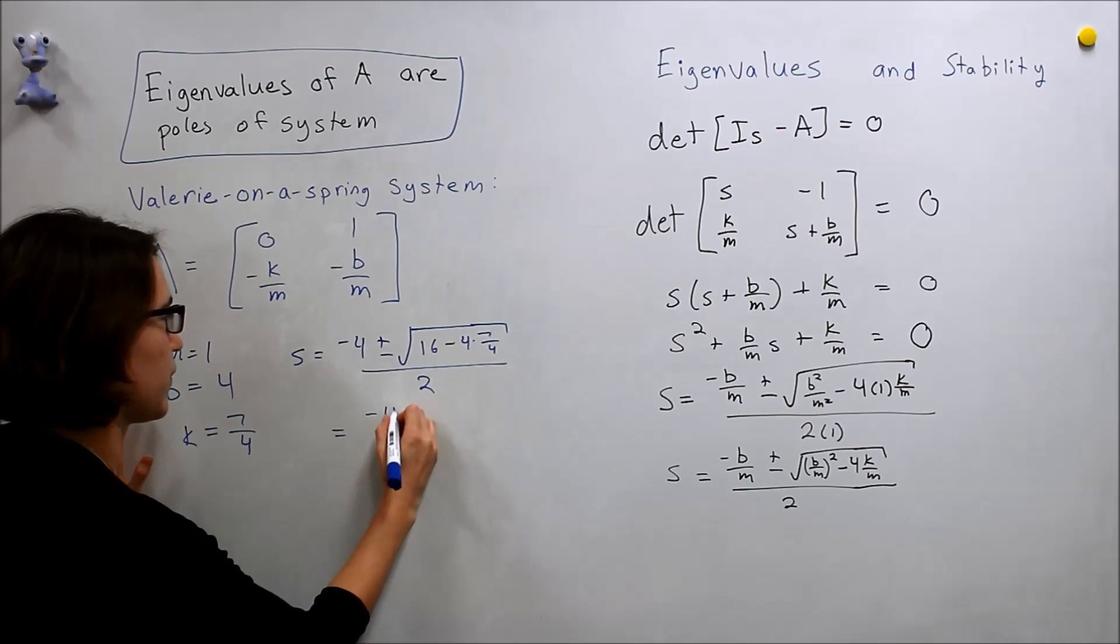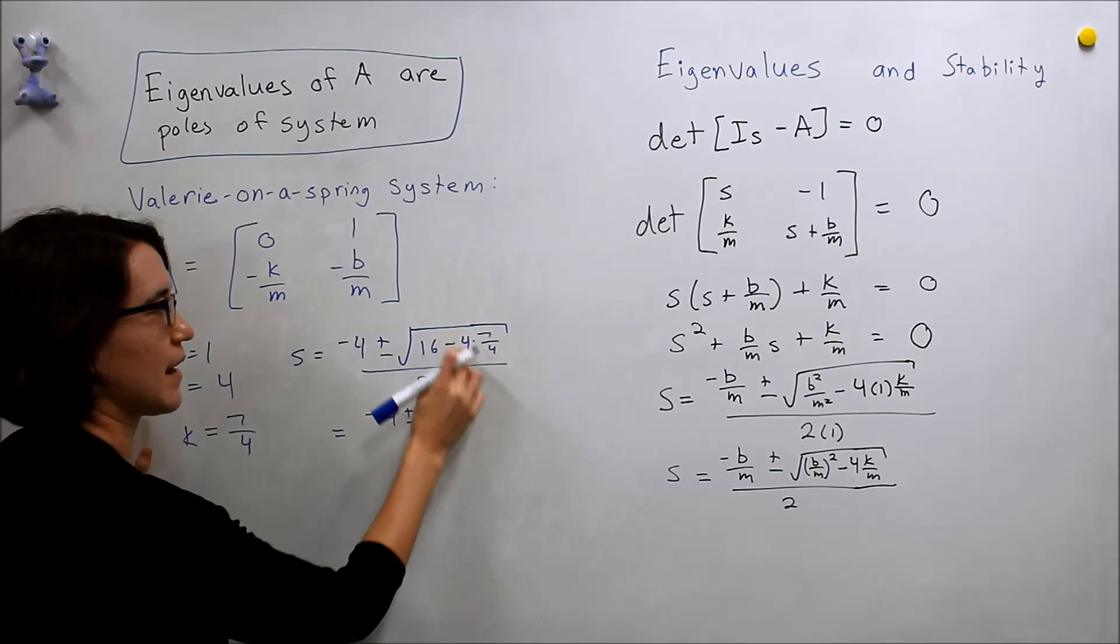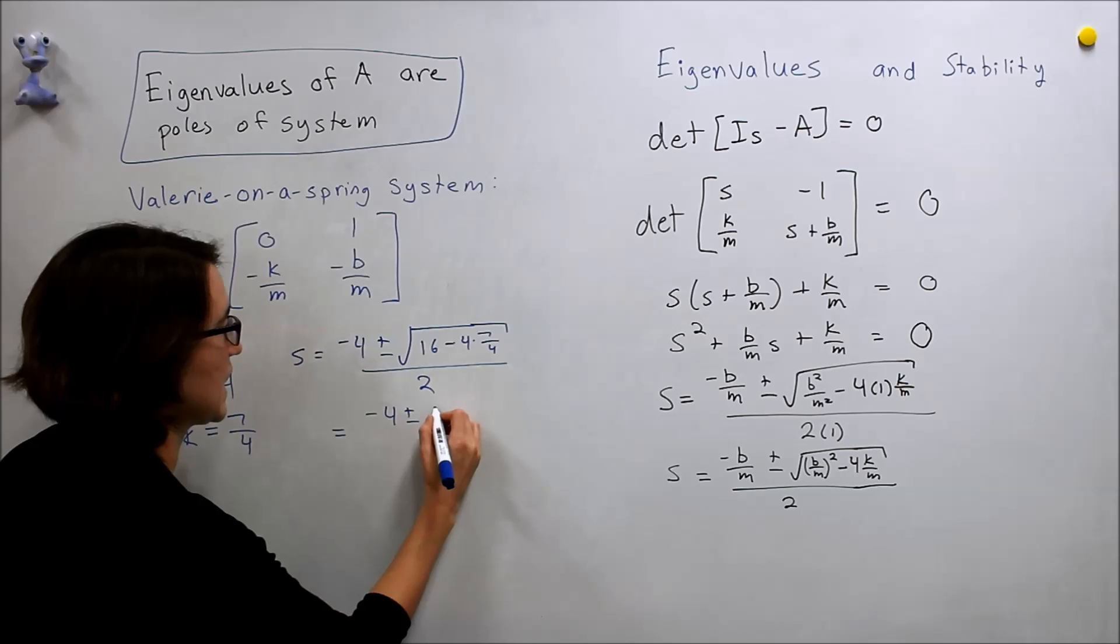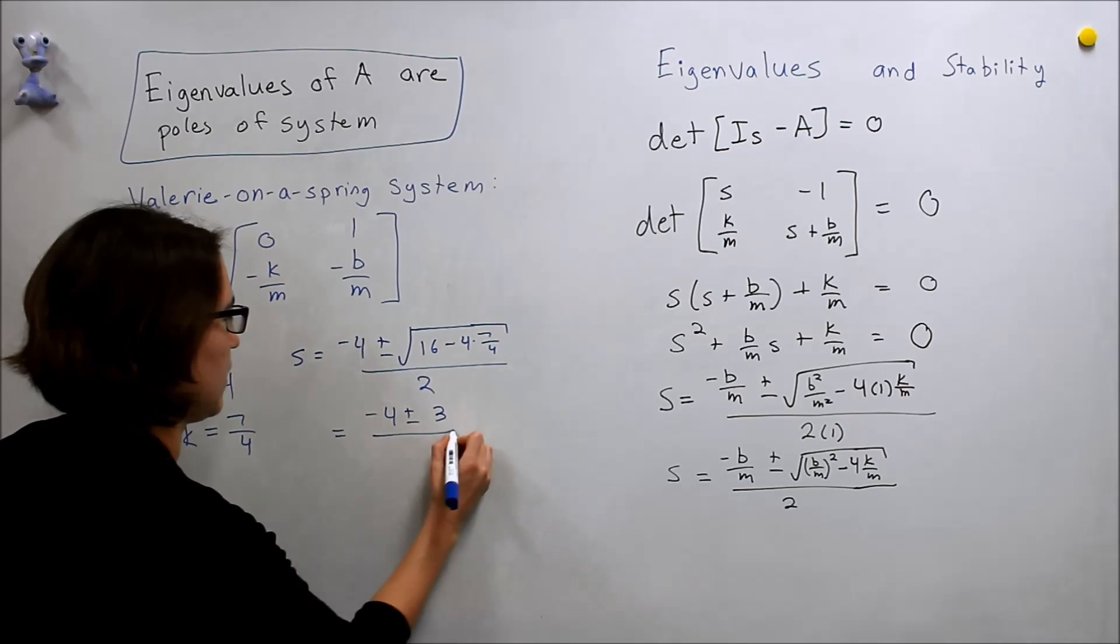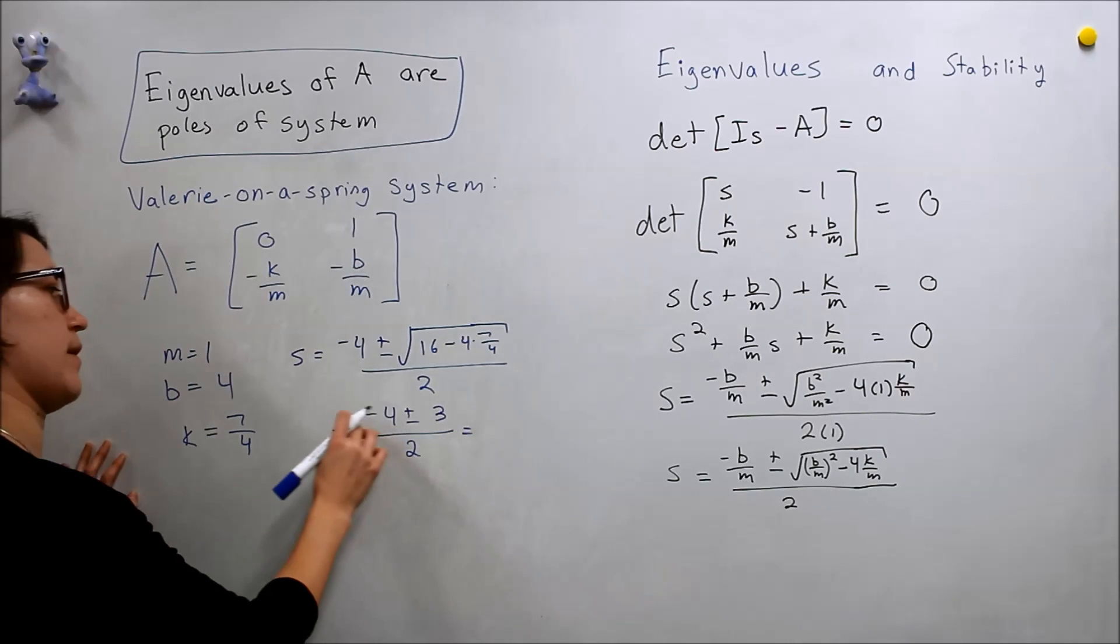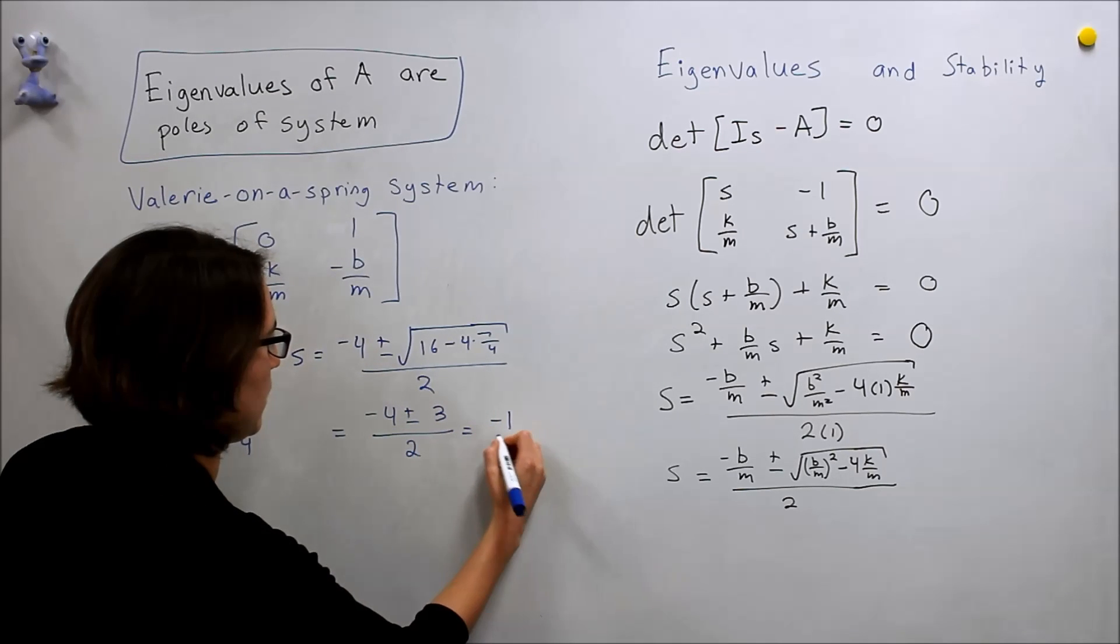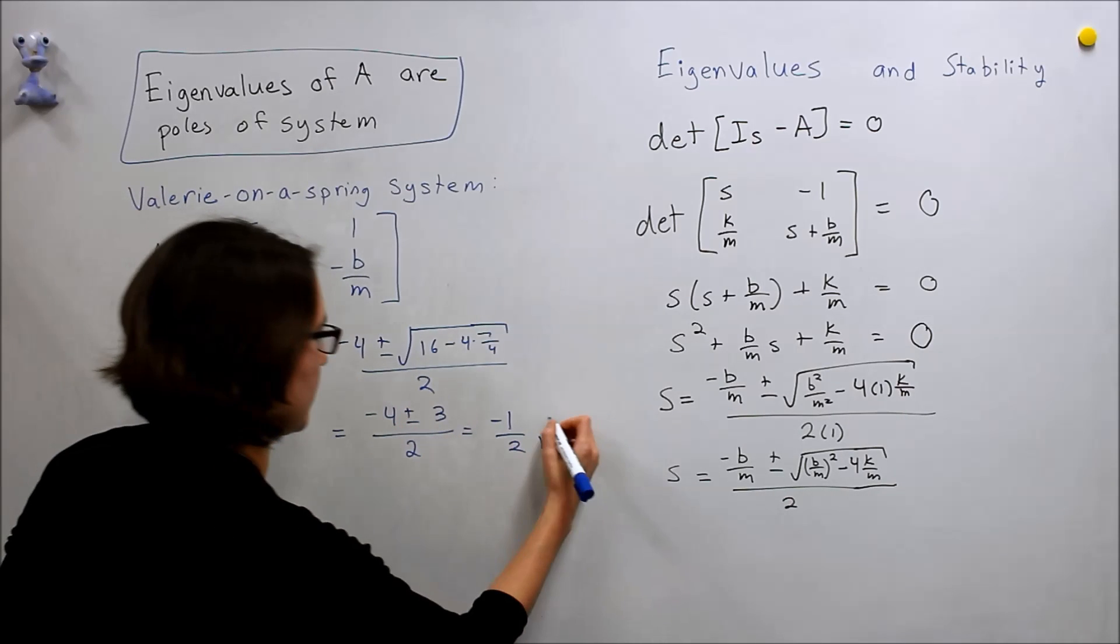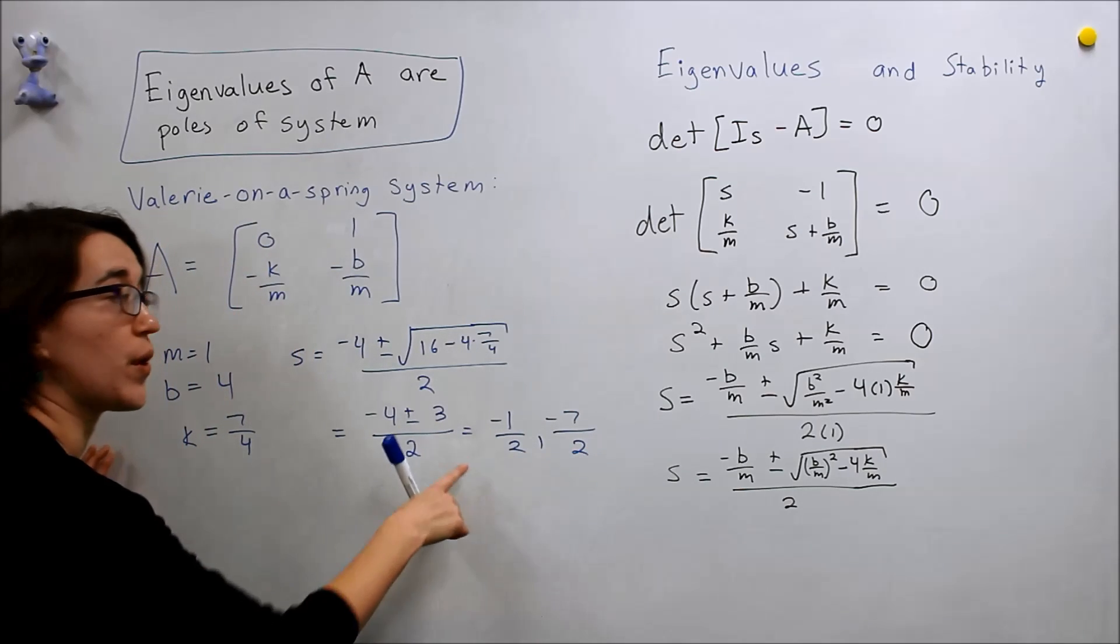We just simplify all that, we get negative 4, plus or minus, this will be 7, so 16 minus 7 is 9, square root of 9 is 3. So we will get this value. So we'll end up with 4 plus 3, so negative 1 over 2, and we subtract the 2, we have negative 7 over 2. So these would be our two eigenvalues.